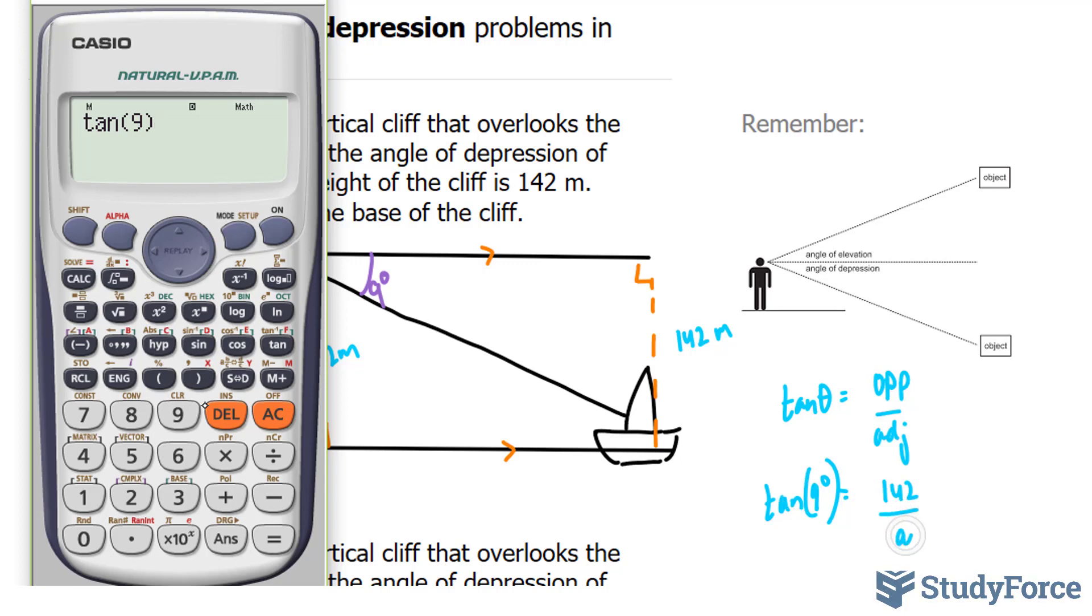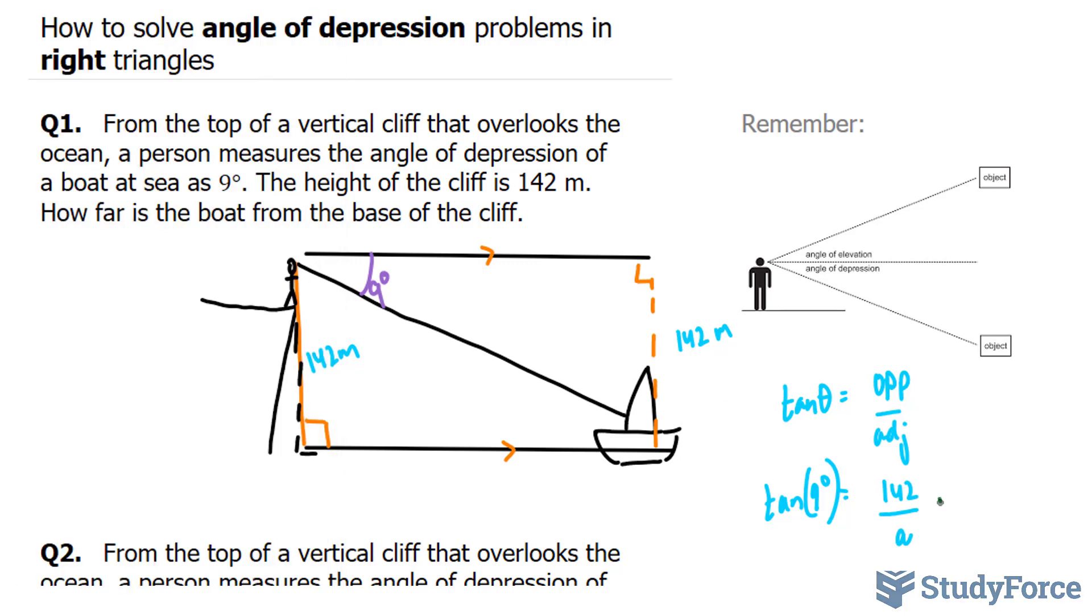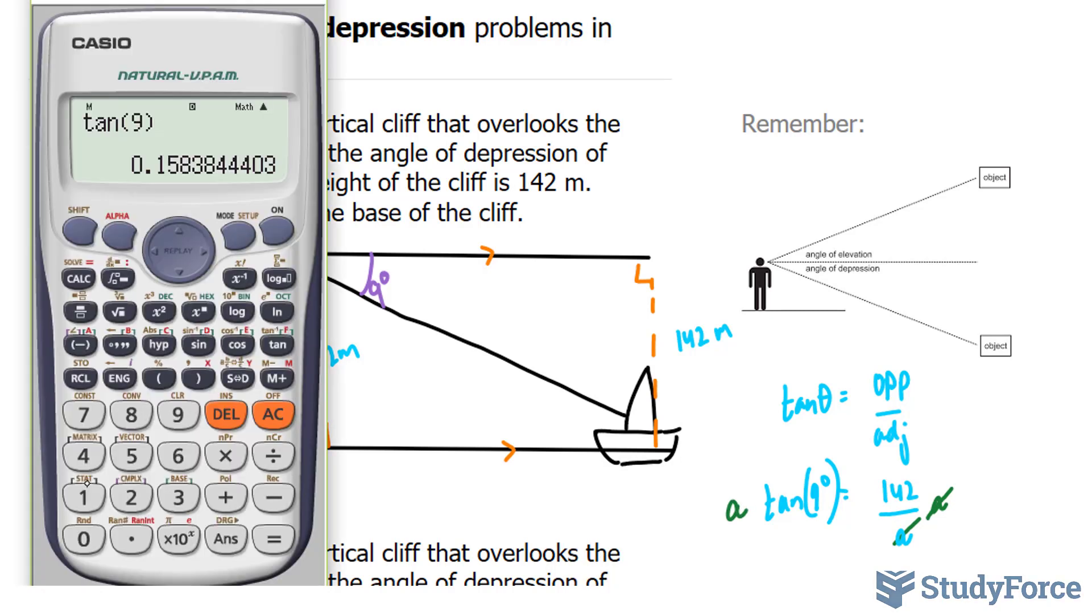On my right side, I have the unknown at the bottom. So what we'll have to do is multiply, first of all, both sides by a. And this will get rid of the a on the right side. And then divide both sides by tangent 9. I'm going to write down 142 divided by tangent 9. And I end up with 896.55.